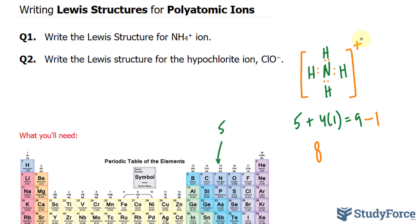Let's move on to question number two. Question number two says, write the Lewis structure of the hypochlorite ion ClO negative. So we have chlorine and oxygen. We can write down chlorine and oxygen like this.